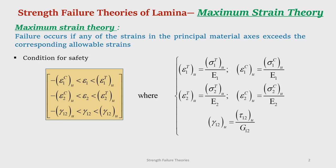In maximum stress theory, given a state of stress we immediately find out the stresses with reference to the material direction — that means sigma 1, sigma 2, and tau 12, which are the normal stress along principal material direction 1, normal stress along direction 2, and the shear stress in the 1-2 plane. Similarly, in maximum strain theory, failure occurs if any of the strains in the principal material axis exceeds the corresponding allowable strains.